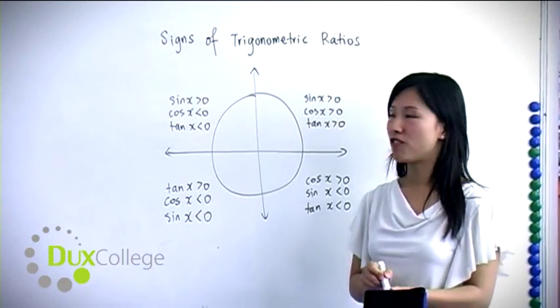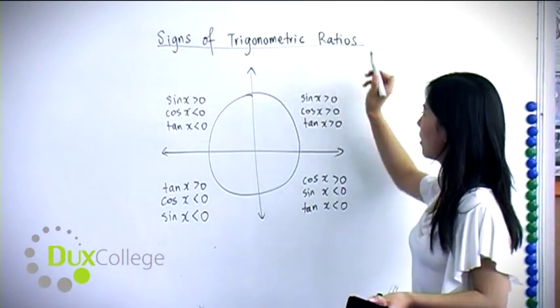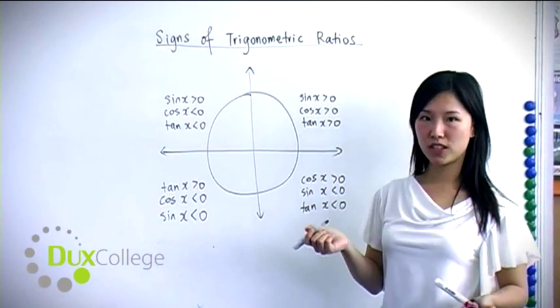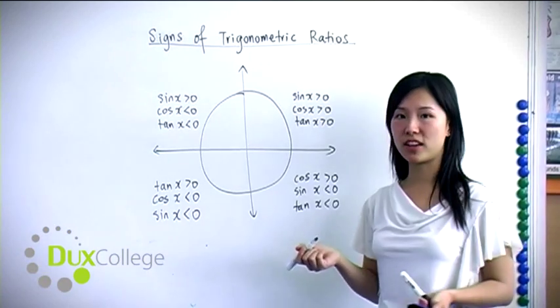Now, signs of trigonometric ratios. Keep in mind that when we count quadrants, we count in an anti-clockwise direction.